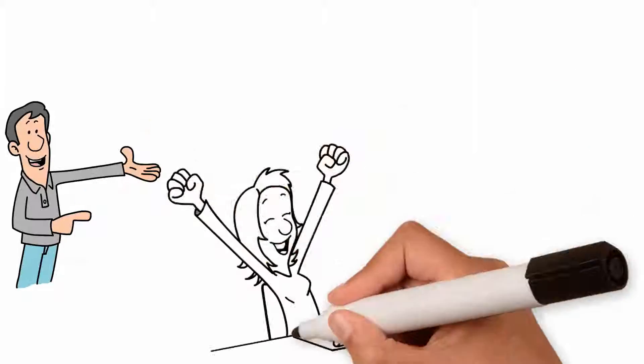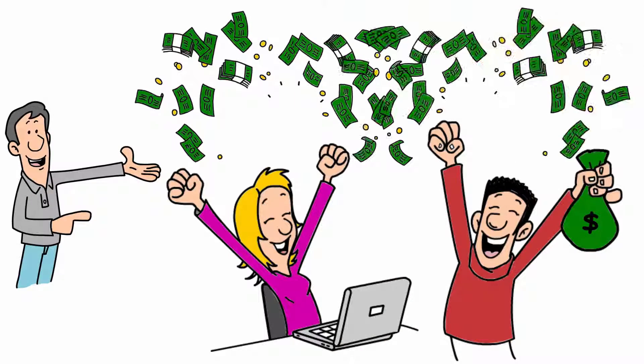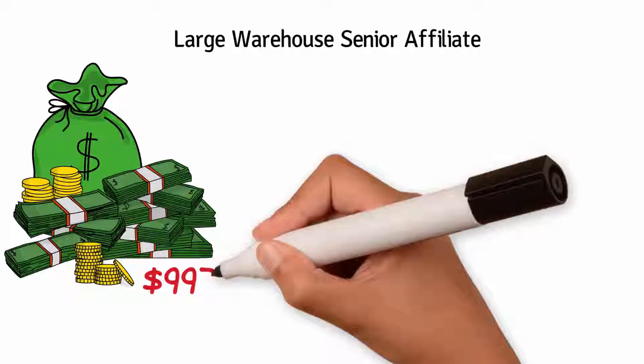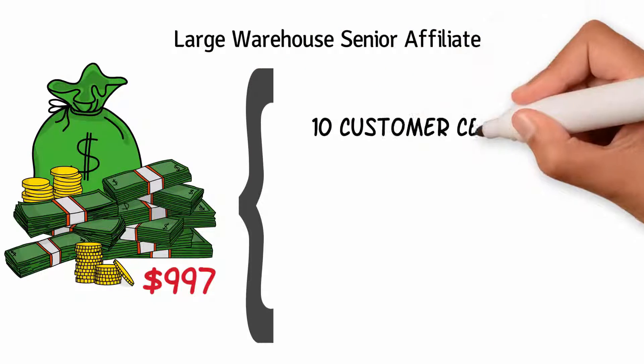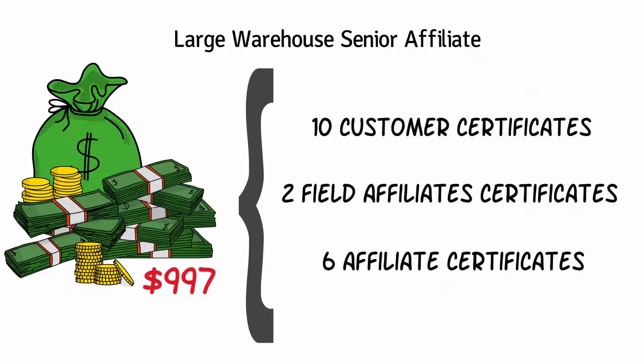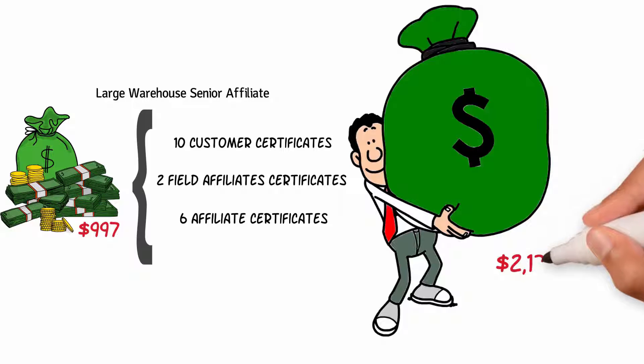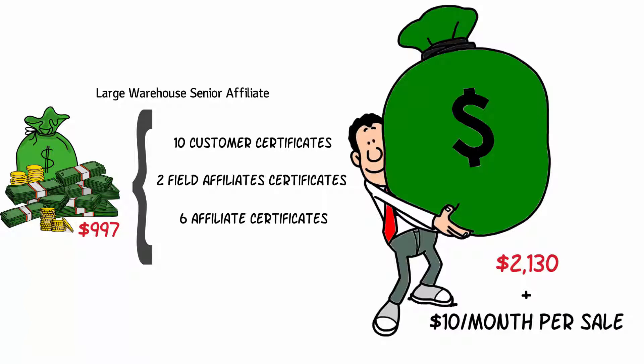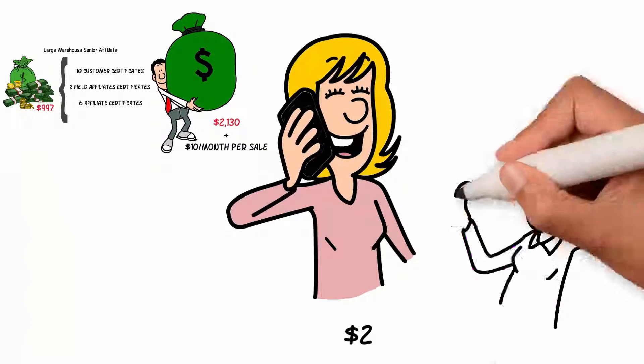Now that you see the value of your home-based business you can now upgrade to a large warehouse senior affiliate. For $997 you get ten customer certificates, two field affiliates and six affiliate certificates. Selling them earns you $2,130 plus $10 every month for each customer and $2 bonus on all referrals.